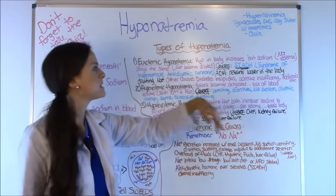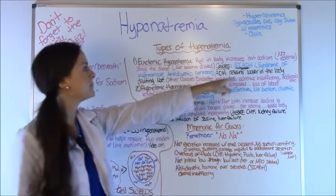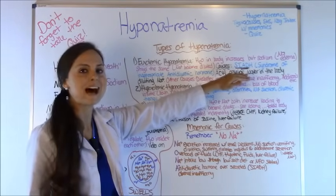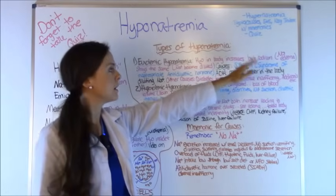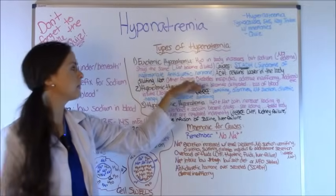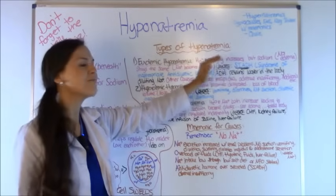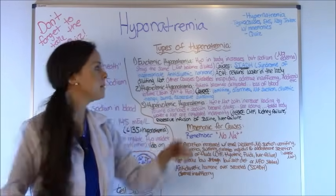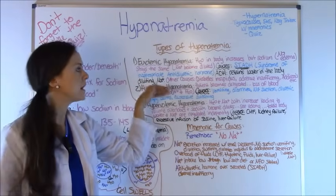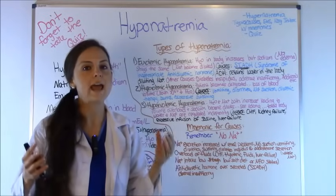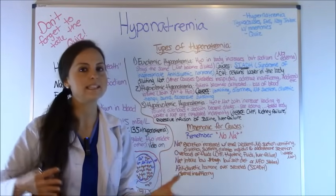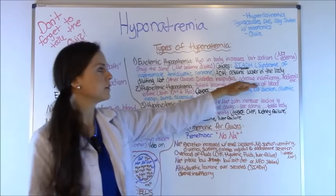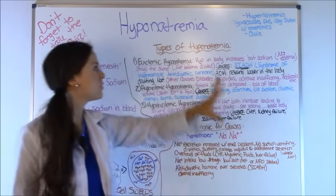There are some causes of euvolemic hyponatremia — and remember this because it's usually a big test question. One cause is SIADH — syndrome of inappropriate antidiuretic hormone. ADH, the antidiuretic hormone, is being secreted in excess, causing the body to retain water, which in turn dilutes sodium. Other causes are diabetes insipidus and adrenal insufficiency, like Addison's disease.